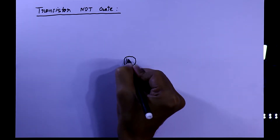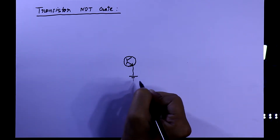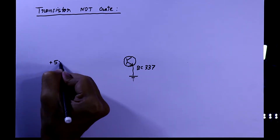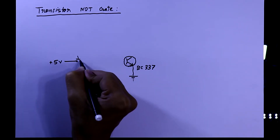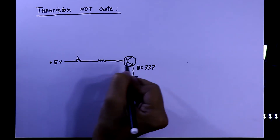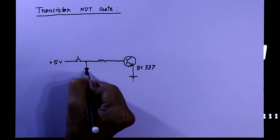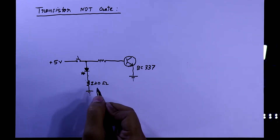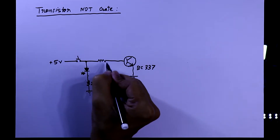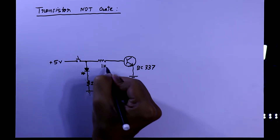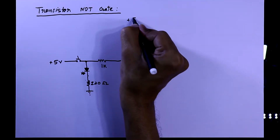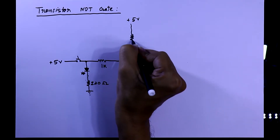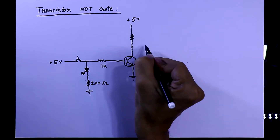To make this circuit, we need any kind of NPN transistor — I am using BC337. At the base of the transistor we will provide plus 5 volts as input. To see the input, we connect an LED with a 220 ohm resistor. The value of the base resistor is 1 kilo ohm. With the collector of the transistor, we connect a 220 ohm resistor, and the other side of that resistor is connected to plus 5 volts.